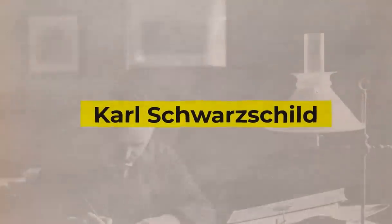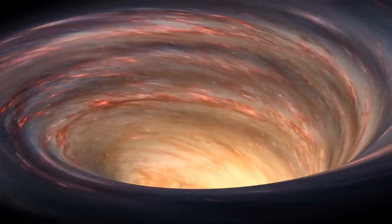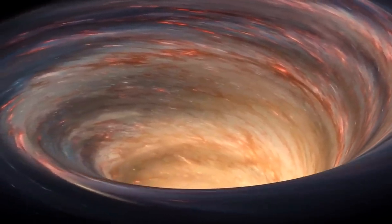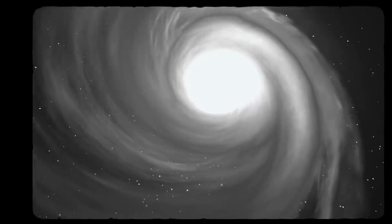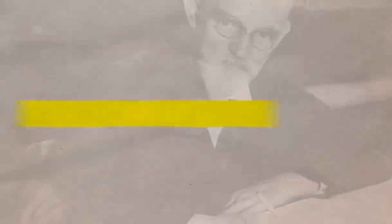Karl Schwarzschild's definition of a non-rotating black hole as a point-like mass was solved in 1916. The answer for an empty universe with a cosmological constant, which describes an exponentially expanding cosmos, was discovered by Willem de Sitter in 1917.